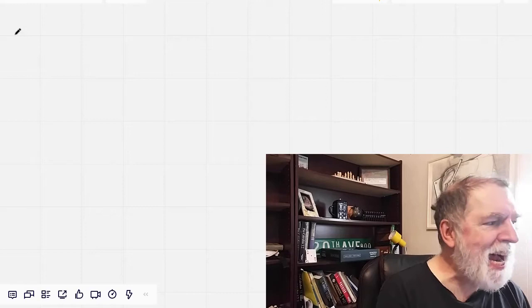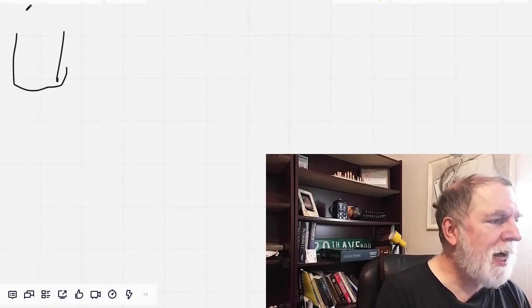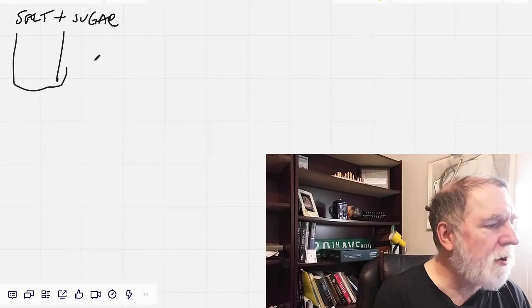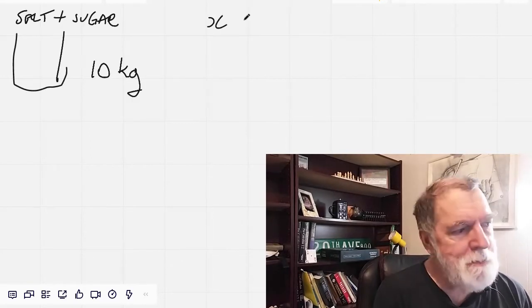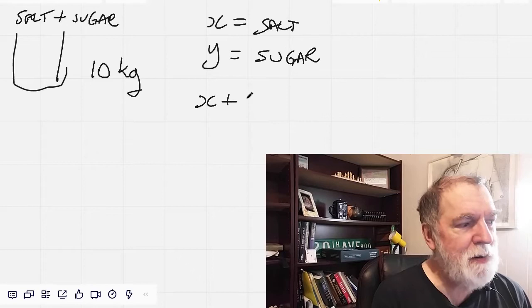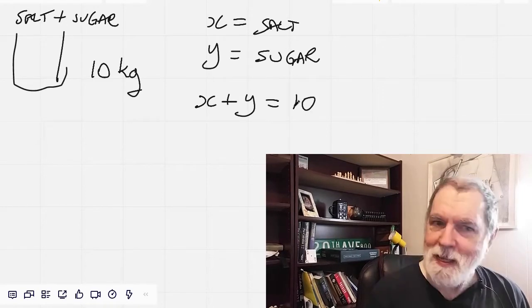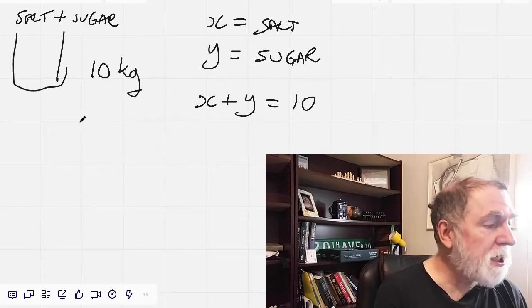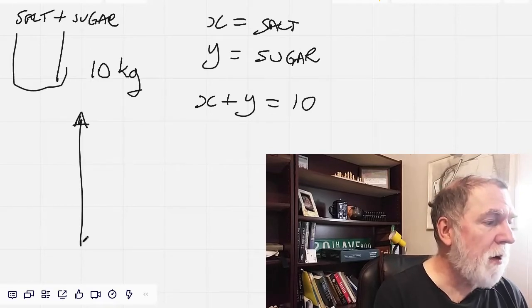Let's suppose you have a sack containing salt and sugar and it weighs 10 kilograms. If we call the mass of salt x and the mass of sugar we'll call y, then x plus y equals 10. That's a linear equation which we can express on this graph. All of our possible combinations are illustrated in this downward sloping line. Over here is one extreme where we're all sugar and no salt, and on the other end is all salt and no sugar, and here's everything in between.